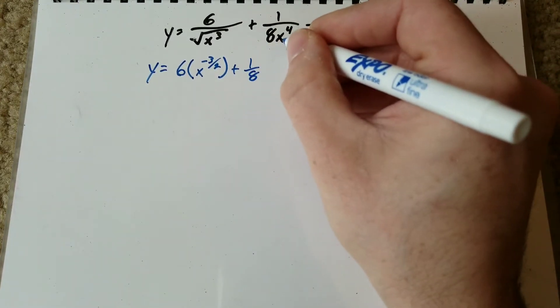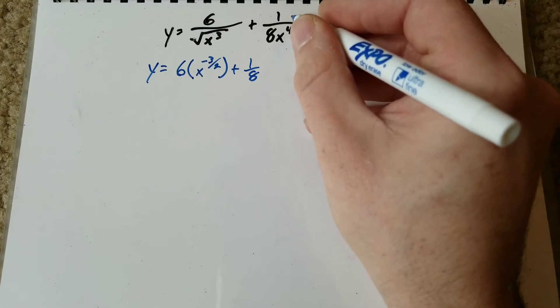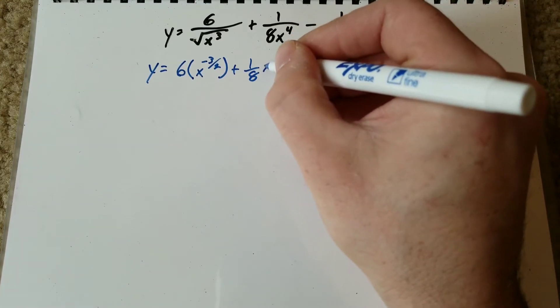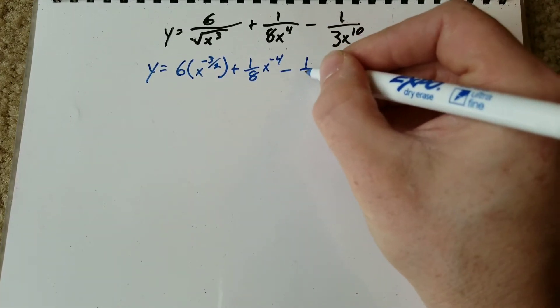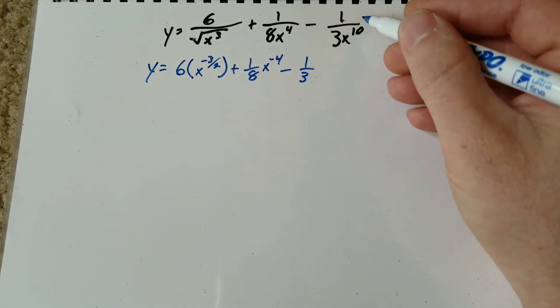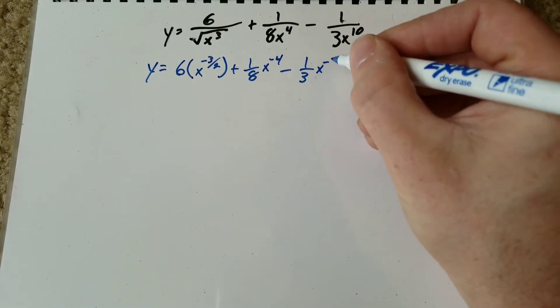one over eight. We're going to move this x to the four to the numerator, so that's going to become x to the negative four minus one over three. And again, we're going to move this x to the numerator, so it becomes x to the negative 10.